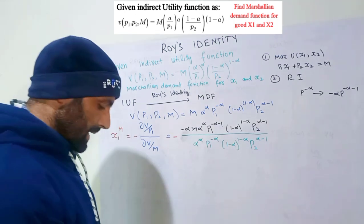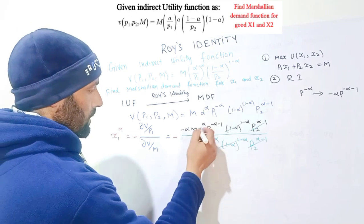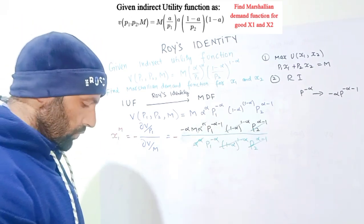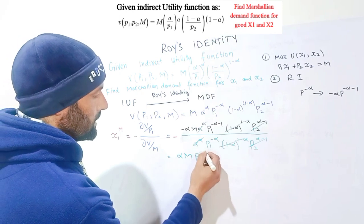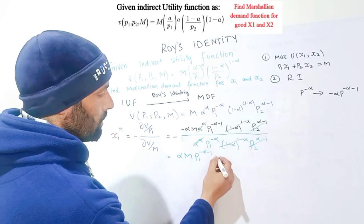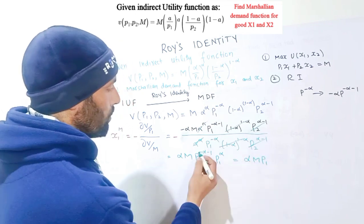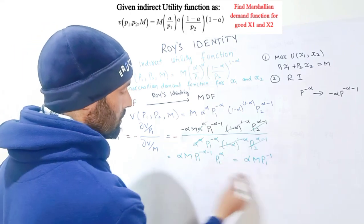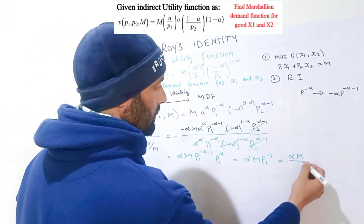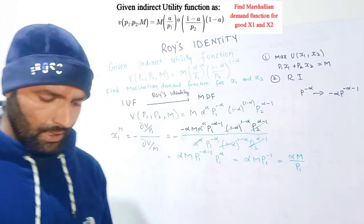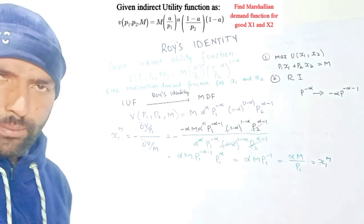Now several terms cancel: alpha^alpha cancels, (1-alpha)^(1-alpha) cancels, and p2^(alpha-1) cancels. We are left with alpha * m * p1^(-alpha-1) / p1^(-alpha). Adding exponents gives p1^(-alpha-1+alpha) = p1^(-1), so x1* = alpha * m / p1.